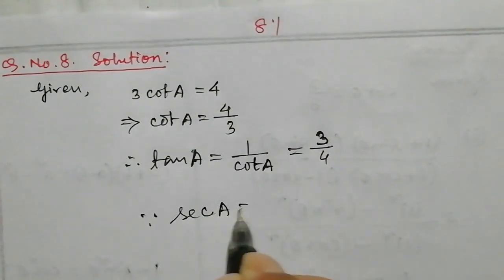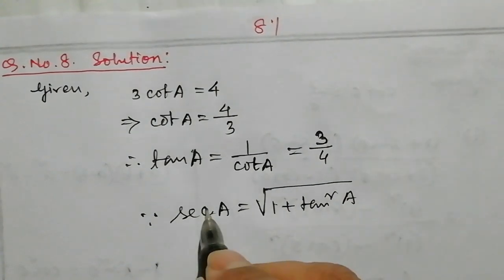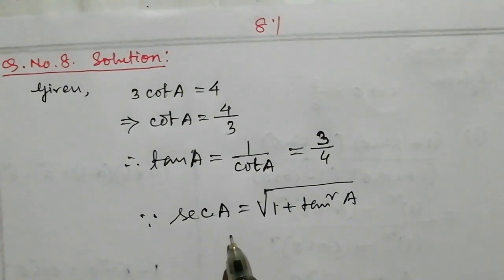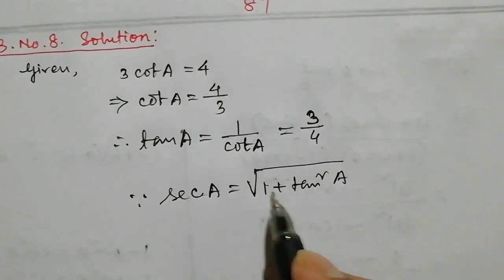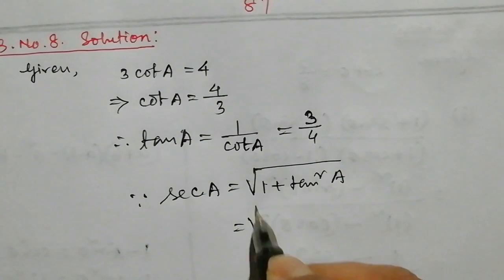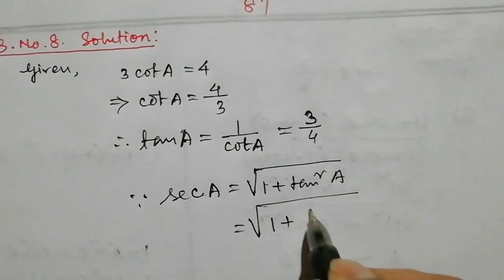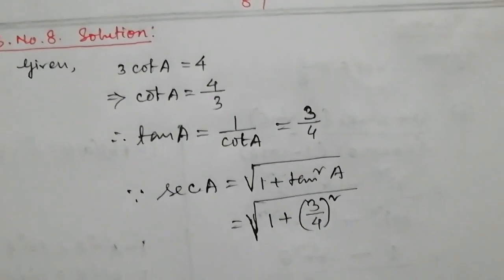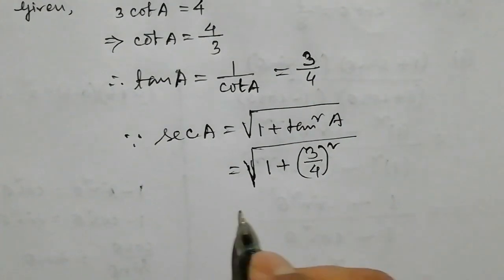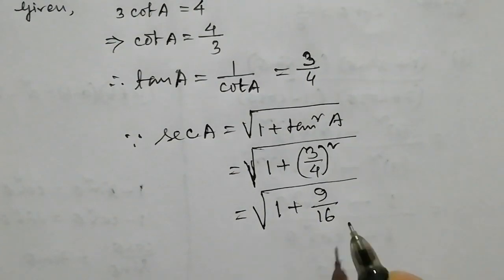We use the formula: sec A equals root over 1 plus tan square A. Substituting, 1 plus tan square A equals 1 plus 3 by 4 squared. That gives 1 plus 9 by 16, which equals 16 plus 9 over 16, equalling 25 by 16.